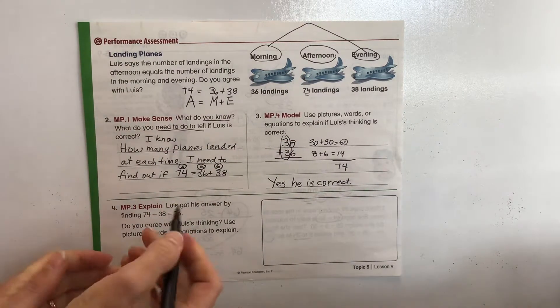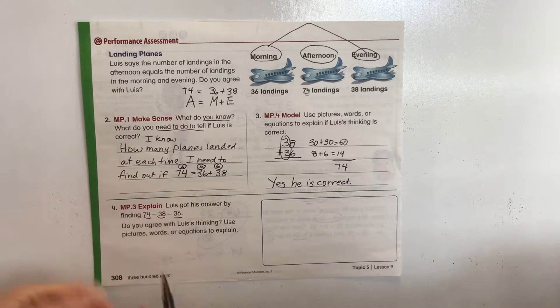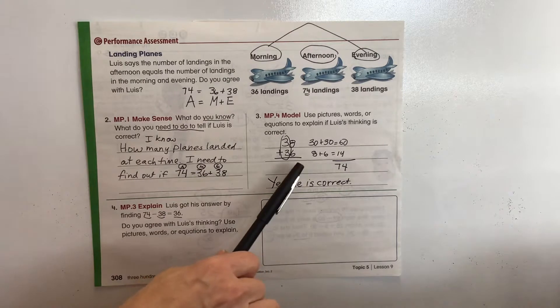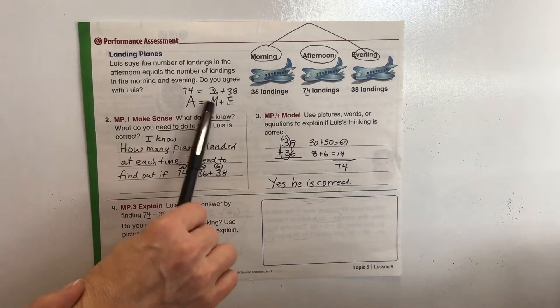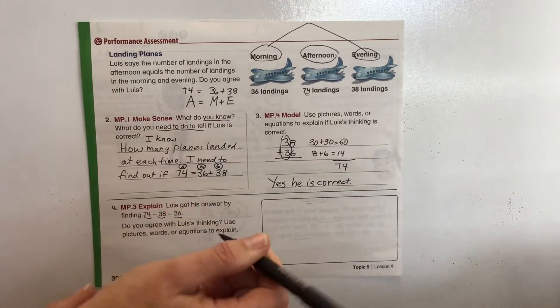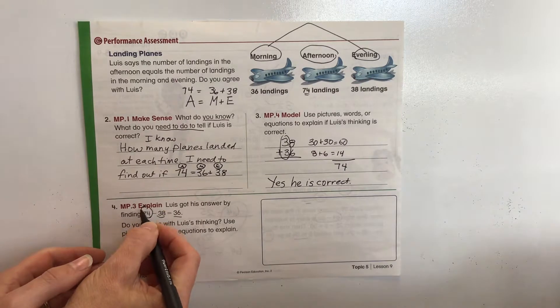Okay, number four. Louise got his answer by finding 74 minus 38 equals 36. Now that's different than how we did it. Now there's a ton of different ways that it could be done. But for this one, I was just thinking with the equation I made, that's how I could do it. But look, his equation is different.